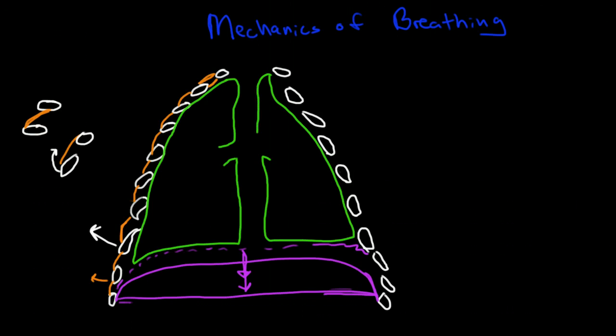Now the parietal pleura is continuous with the, so the parietal pleura is the outer layer that goes against the chest wall, and it's continuous. That means these layers are all one piece. They connect together at the hilum, and the inner layer is called the visceral pleura.